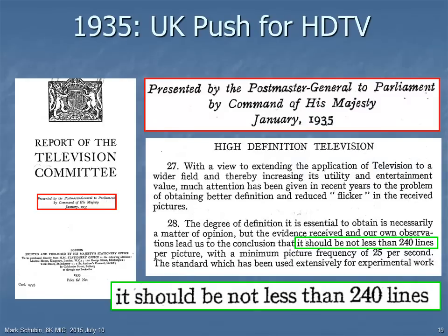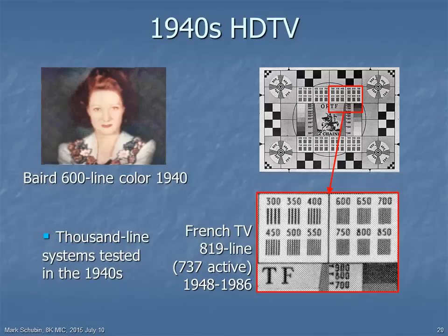By 1935, a British Parliamentary Committee recommended a move to what they then called high-definition television, defined as having a resolution not less than 240 lines. By the 1940s, there were experiments with what we would even today consider high-definition television. France began broadcasting 819-line television. In 1948, it had 737 active or picture-carrying lines, and there were even experiments with thousand-line color television.